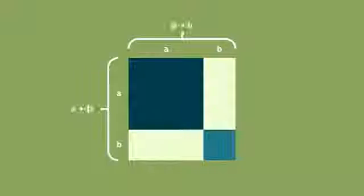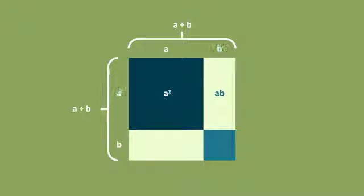G-Squared knows a good strategy when he sees one. He uses an area model to find the product of the two binomials. To set up the area model, he divides a rectangle into two rows and two columns and labels each of the four sections with a term from the two binomials. Then he calculates the area of each section: a times a is a squared, a times b is ab, and b times a is also ab.